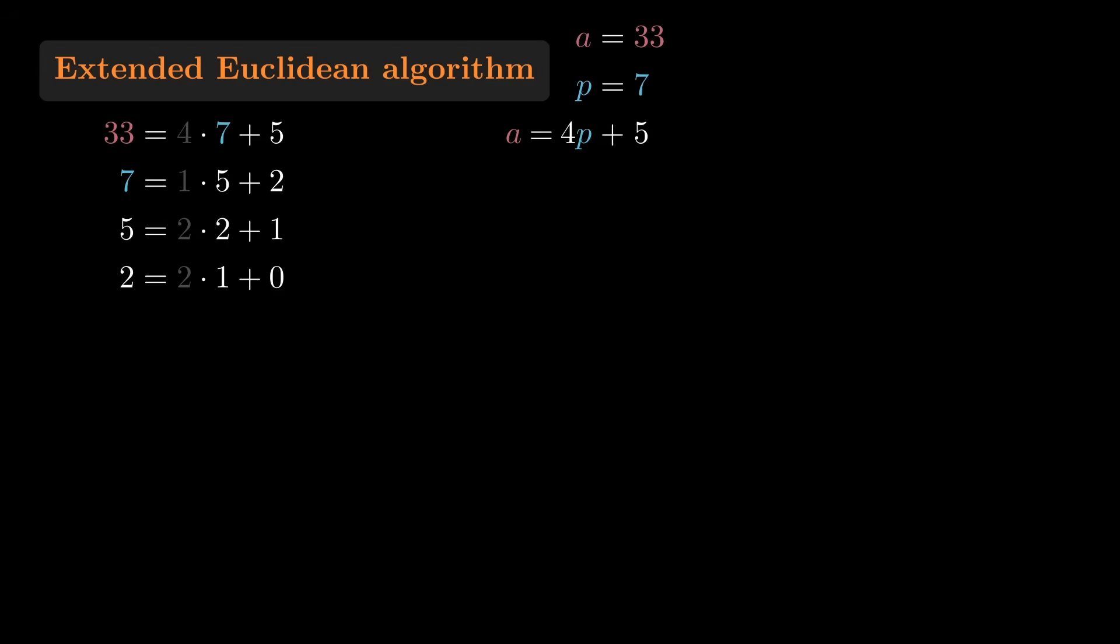Now, in the second equation, 5 is A minus 4P, and 7 is P. Let's solve this for 2 so that we'll be able to rewrite 2 in the third equation. Simplifying, we get that 5P minus A equals 2.